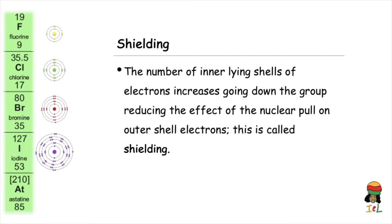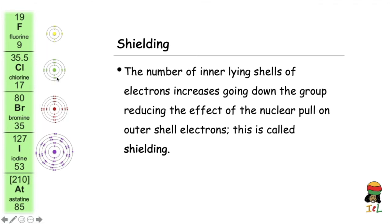The third trend is shielding. As we learned in the previous lesson, shielding occurs when the inner-lying shells of electrons block or weaken the effect of the nuclear pull on the outer shell electrons. As the atomic radius increases down the group, the number of inner-lying electron shells also increases — that is, the number of shells between the nucleus and the last shell increases.